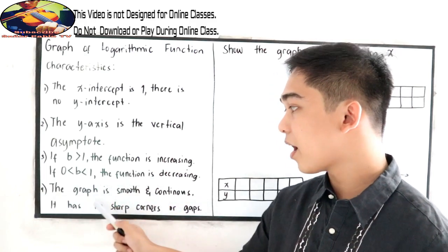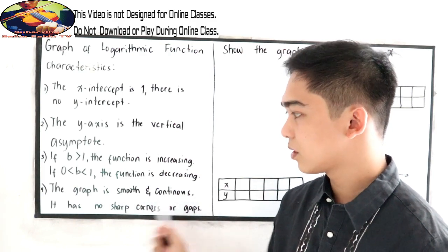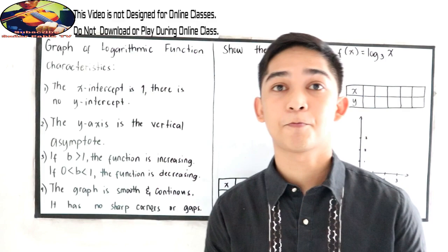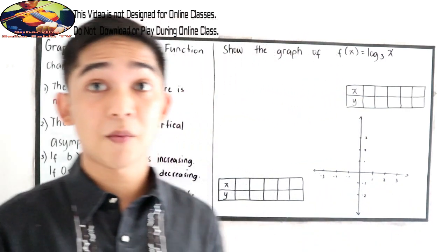Number 4, the graph is smooth and continuous. It has no sharp corners or gaps. To better understand, let's have this example.